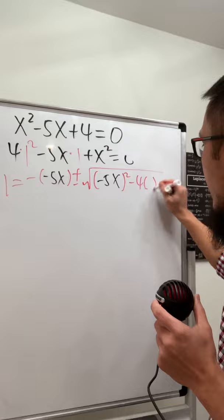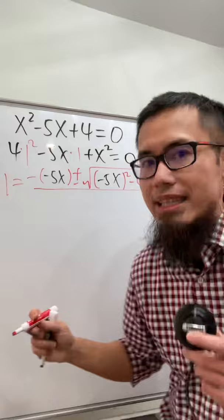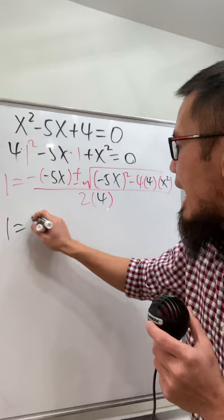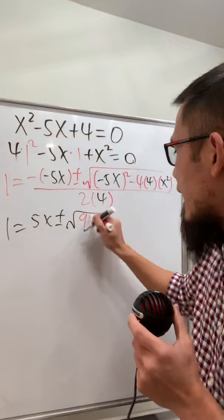a is 4 and c is x², so let's put them down and divide by 2a, which is 2 times 4. Now we have 1 equals 5x plus or minus the square root of 25x² minus 16x², giving us 9x² divided by 8.